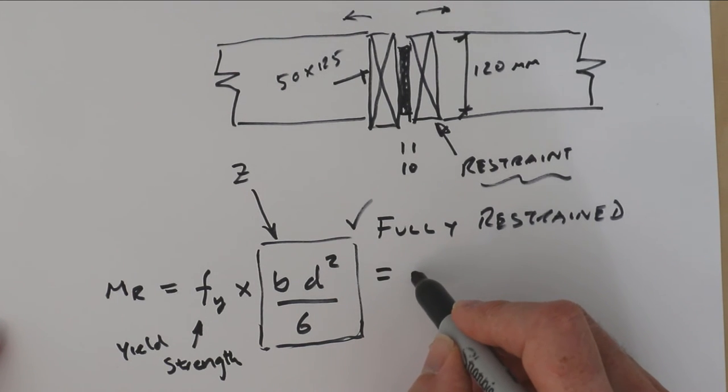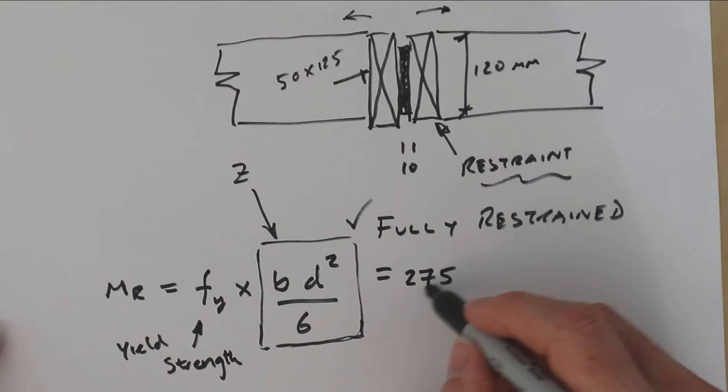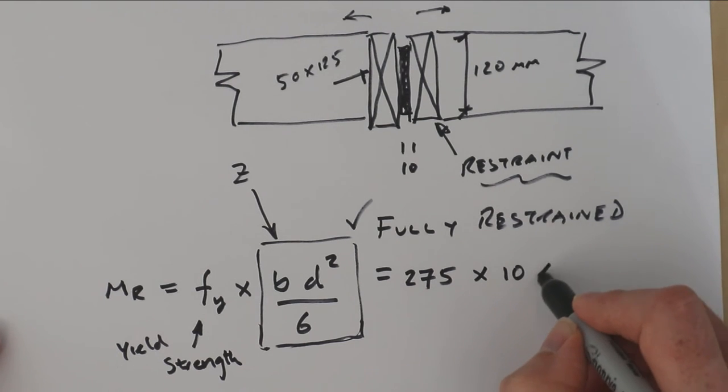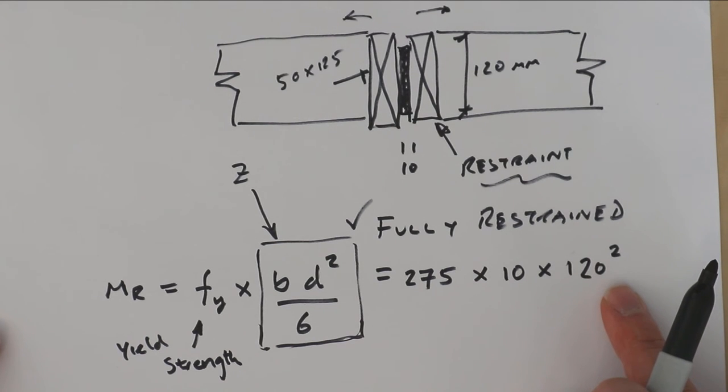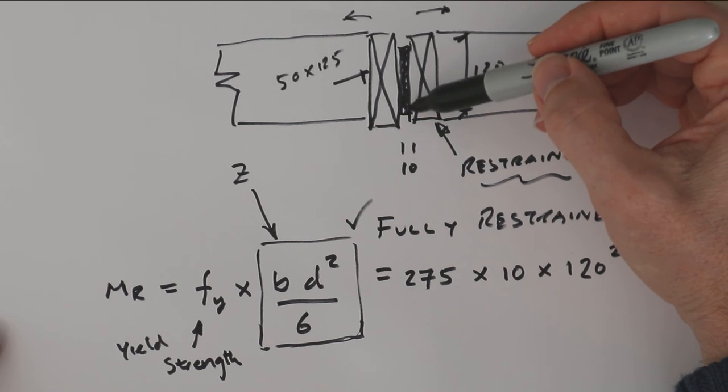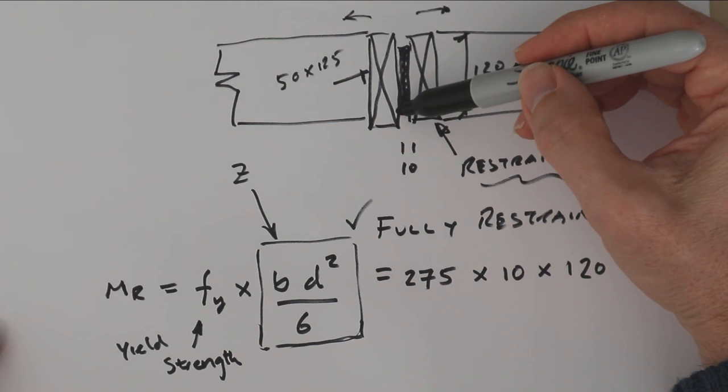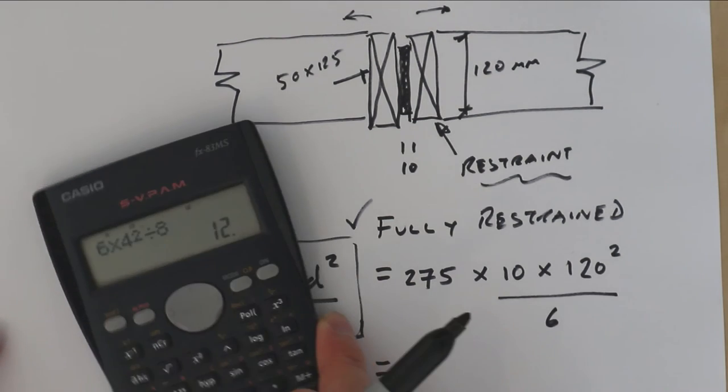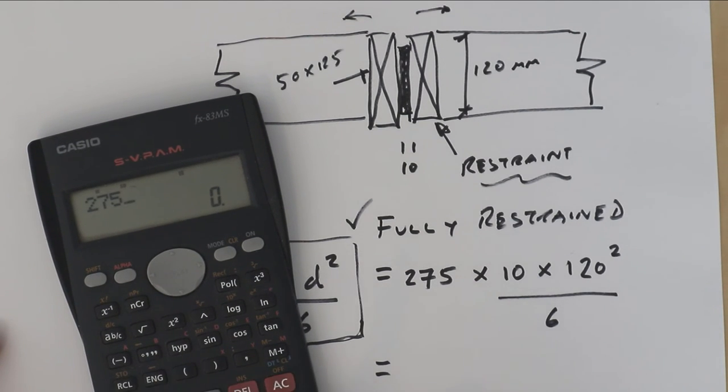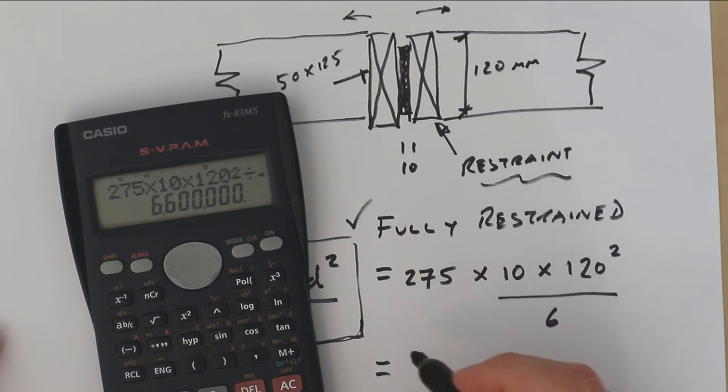Let's do that calculation. If we're using 275 grade steel, then our yield strength is 275 multiplied by 10 multiplied by d, the depth, which is 120 squared. We can see here straight away that the depth is the most important thing because that's the squared value. The width of the steel doesn't matter so much, which is why a flitch beam is so effective—you've got most of the steel within the depth rather than in the breadth. bd² over 6. Let's do that calculation: 275 × 10 × 120² ÷ 6. We can see that's a large value, 6.6 million, so we'll call it 6.6 × 10⁶.